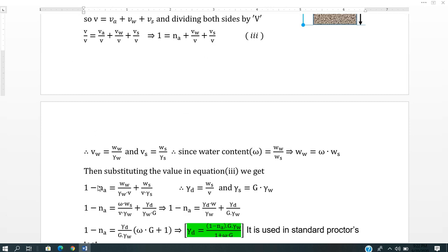So 1 minus Na equals weight of water divided by specific weight of water times total volume, plus weight of solid divided by specific weight of solid times total volume. Weight of solid by total volume equals gamma d.